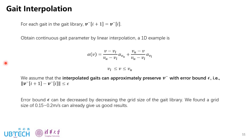The second step is gate interpolation. Now here we want to obtain the gate that can preserve V-minus. We know that for each gate in the gate library, V-minus is preserved. But we only have gates for a finite set of V. So in order to obtain continuous gate parameter, here we do linear interpolation. And this is a 1D example. We assume that the interpolated gates can approximately preserve V-minus with a small error bound epsilon. And this error bound can be decreased by decreasing the grid size of the gate library. We found a grid size of 0.15 to 0.2 meter per second can already give us good results.